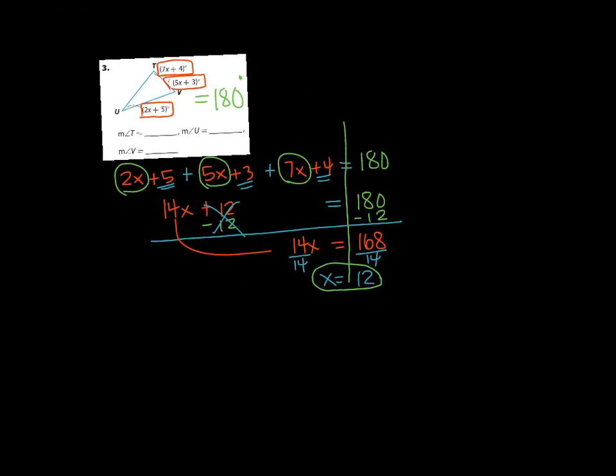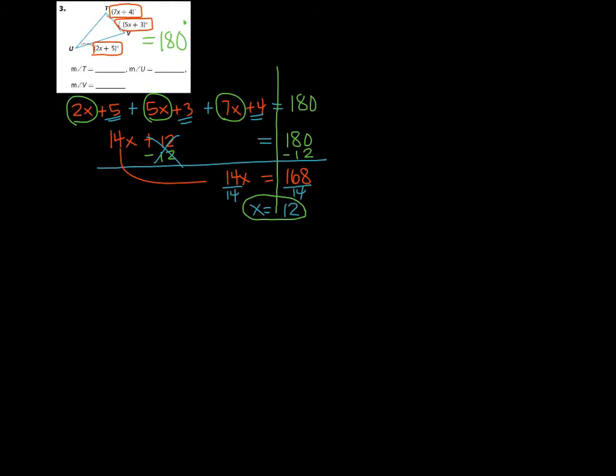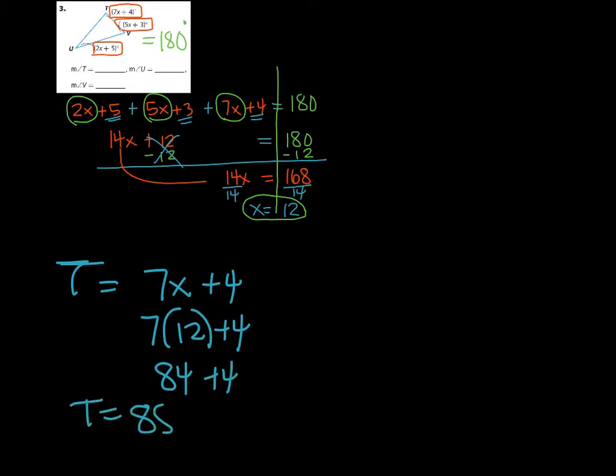So I'm going to shrink all this up out of the way just a little bit. The first angle that they're telling me that I need to find is angle T. Angle T is up at the top and it says 7x plus 4. So for angle T, the expression was 7x plus 4. I'm going to take the value I just found for x, I'm going to plug it in where the x is and I'm going to find out how much T equals. 7 times 12 is 84, then I'm going to add 4 more to that. So the final value of angle T is 88 degrees.